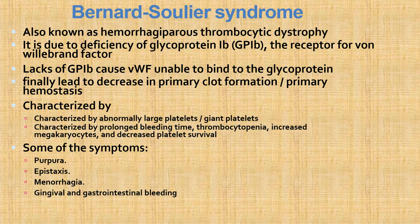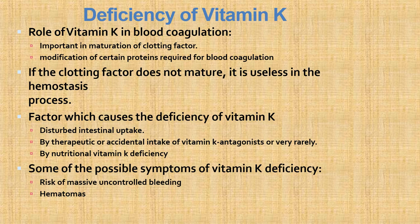Bernard-Soulier syndrome (also known as hemorrhagic parous thrombocytic dystrophy) is due to deficiency of GP1b, the receptor for von Willebrand factor. Lack of GP1b causes von Willebrand factor to be unable to bind to the glycoprotein, leading to decreased primary clot formation. It is characterized by abnormal large (giant) platelets, prolonged bleeding time, thrombocytopenia, increased megakaryocytes, and decreased platelet survival. Symptoms include purpura, epistaxis, menorrhagia, and gingival/gastrointestinal bleeding.